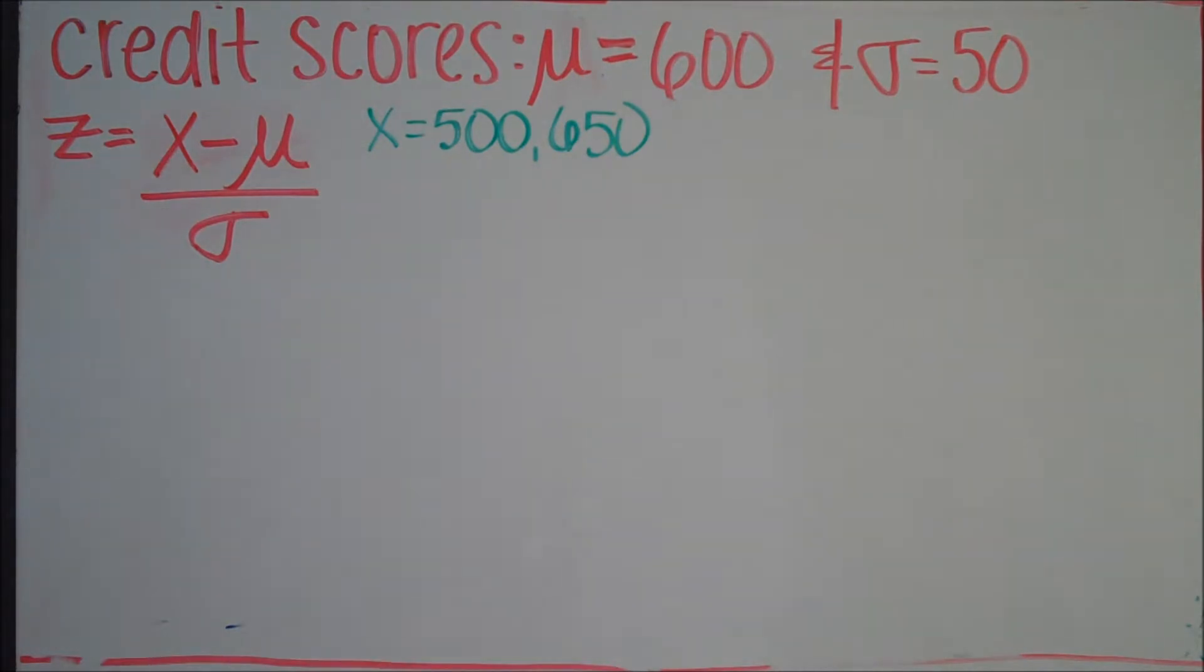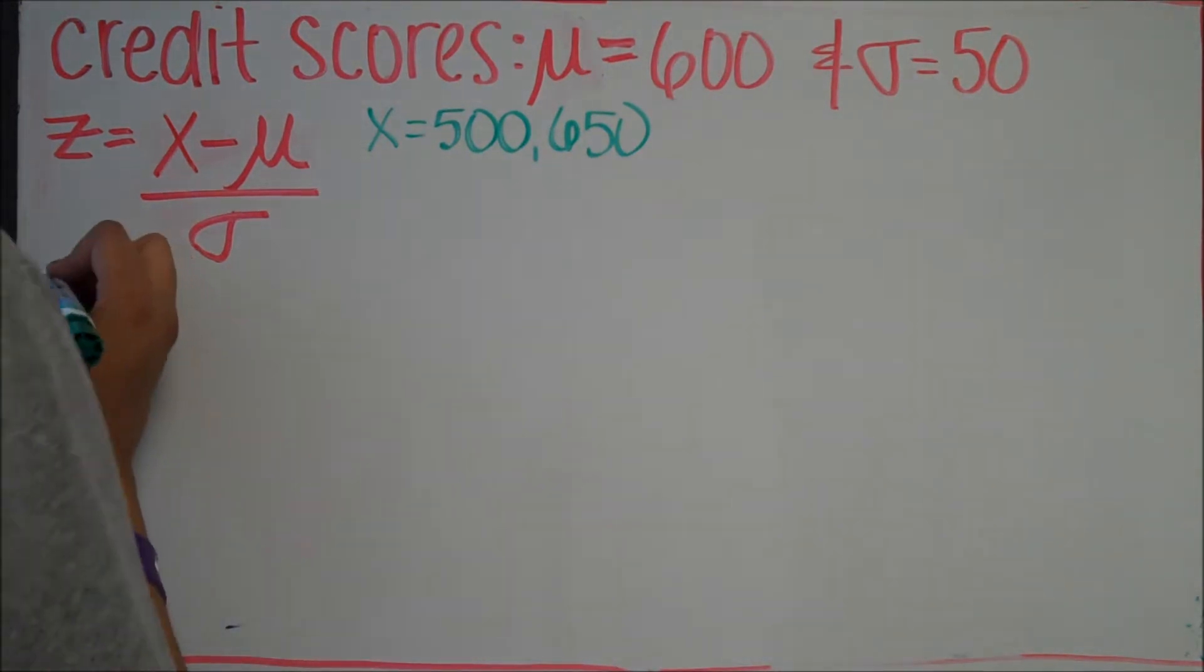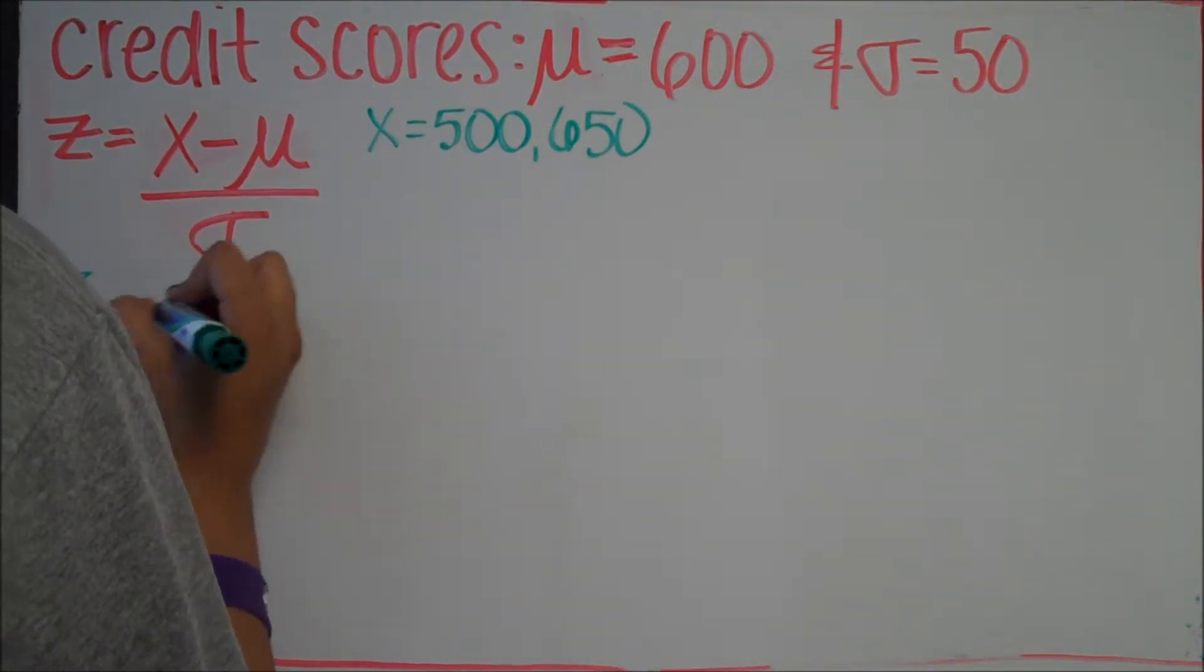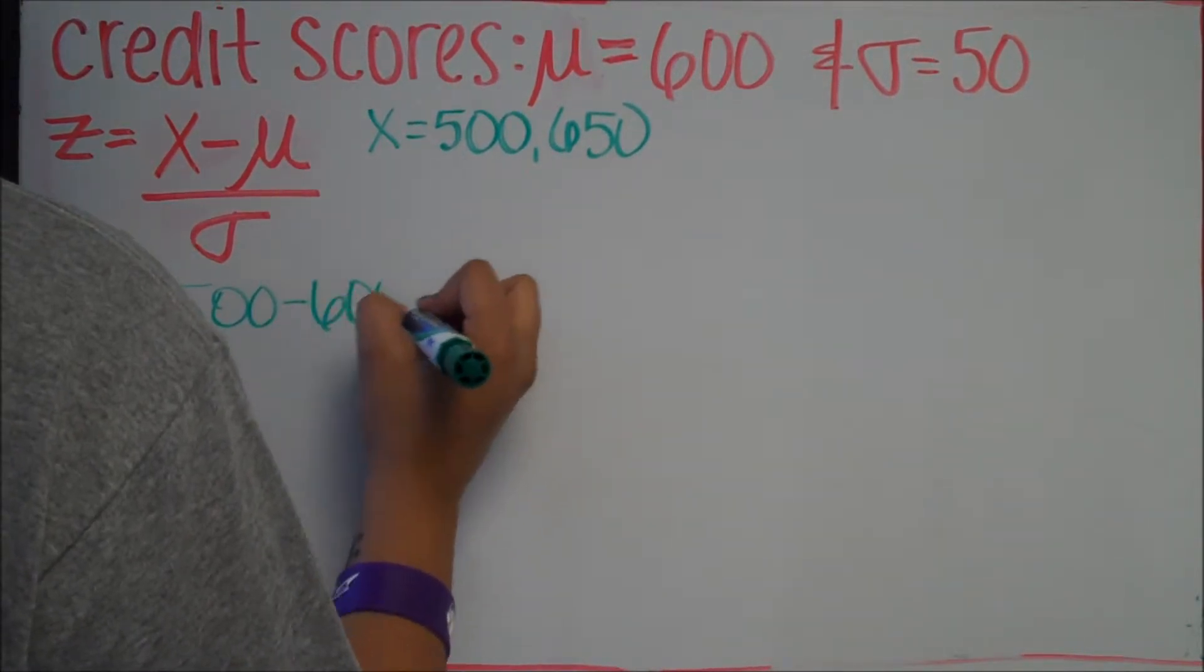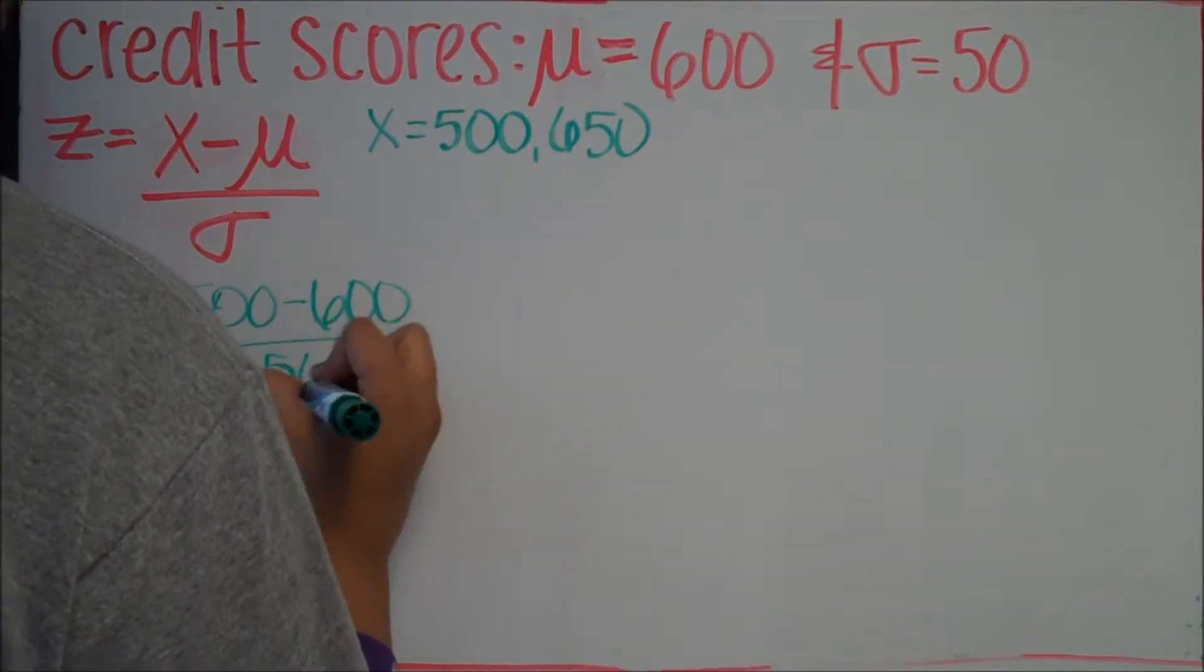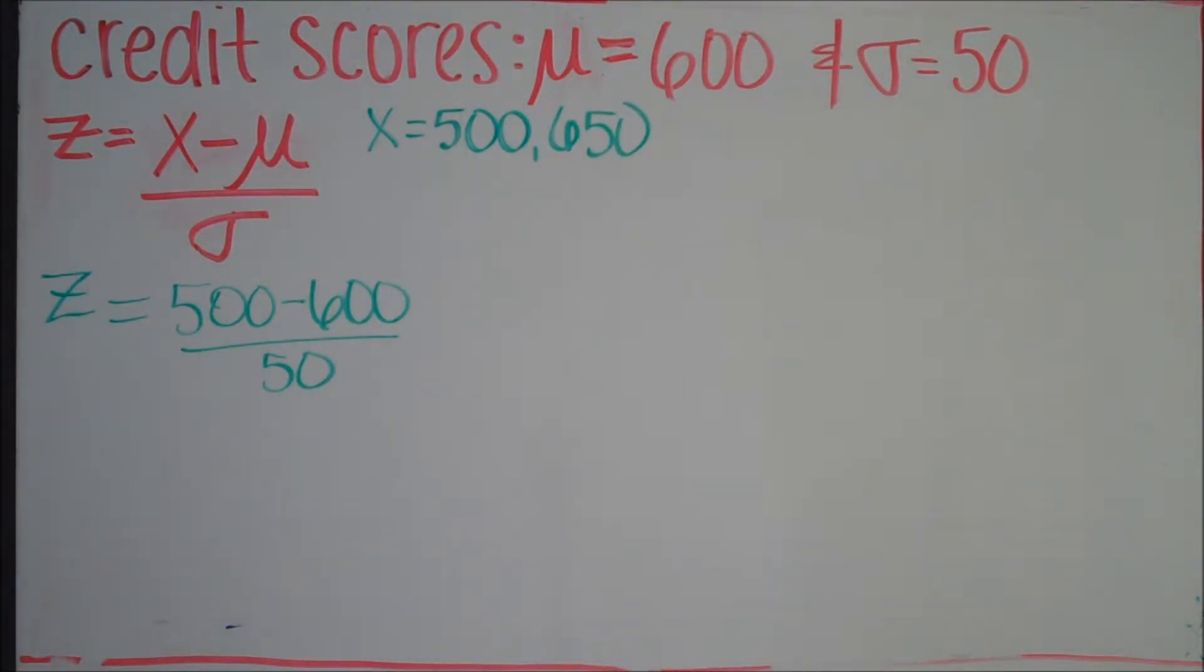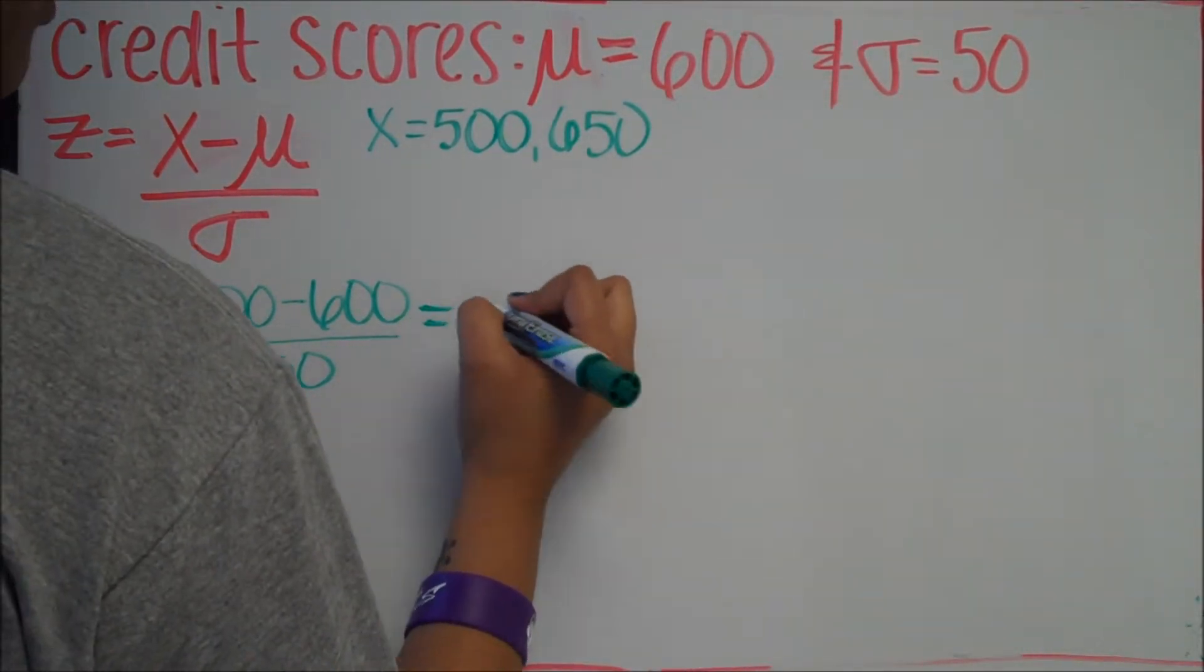We just read the problem and it said our x values are equal to 500 and 650. So we want to convert those to z-scores to standardize them. z equals 500 minus 600 divided by 50. And we got our values from the problem as well. You should get negative 2 for this answer.